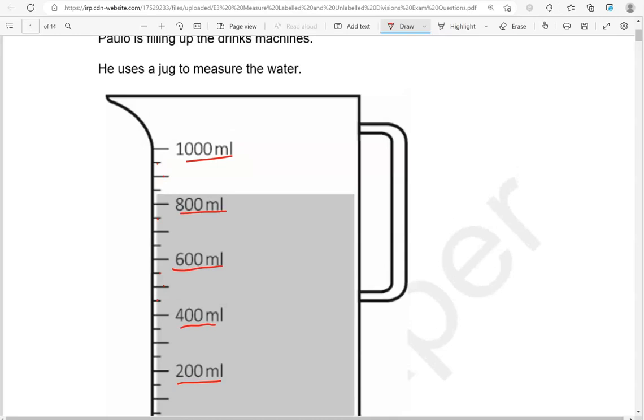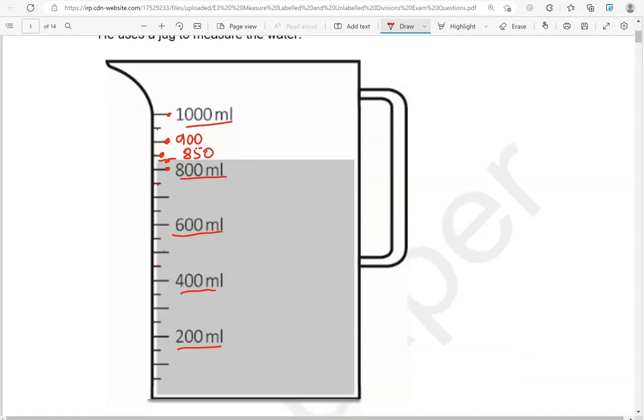If you look at this, this is nearest to this division. What does that division represent? The midpoint between 800 and 1000 is 900. So we're going up in steps of 100. Halfway between 800 and 900 is 850. So this point here, this division represents 850. So this is closer to 850 milliliters.